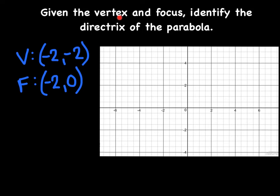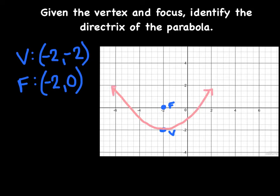This time we're given the vertex and the focus, and we want to identify the directrix. Everything goes back to: the vertex must be halfway between the focus and the directrix. Plotting the vertex and the focus at (−2, 0), the focus is on the interior, so the parabola opens upward. The distance between the focus and vertex is 2 units, so dropping another 2 units puts the directrix at y = −4.